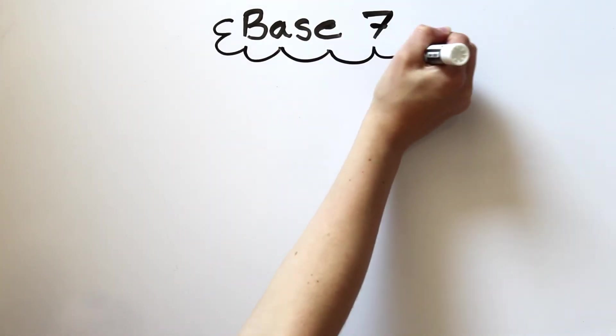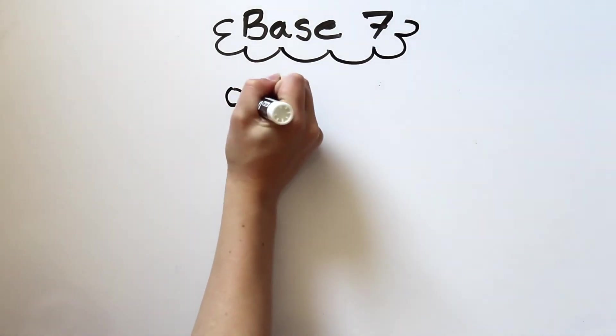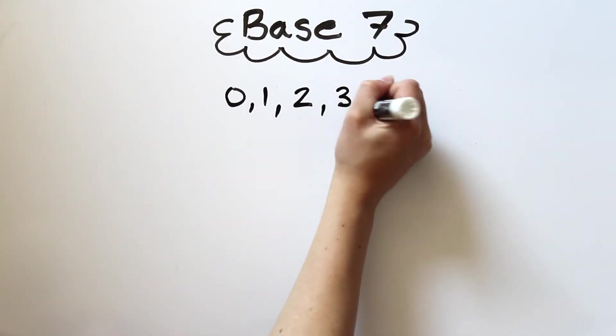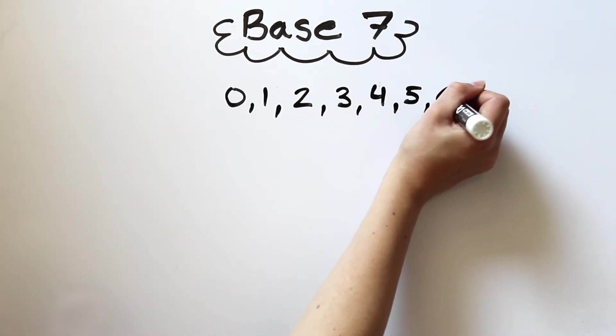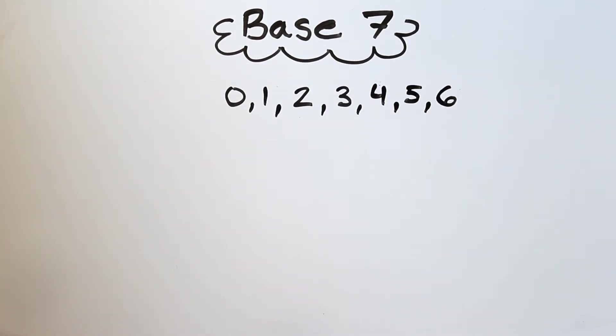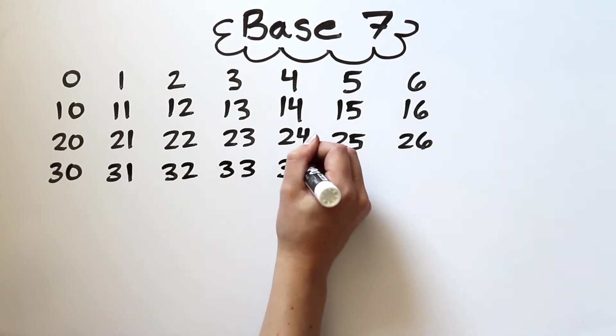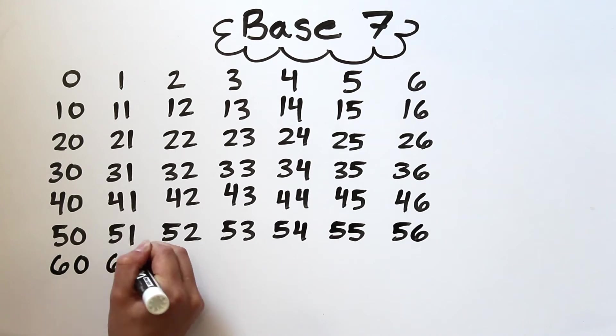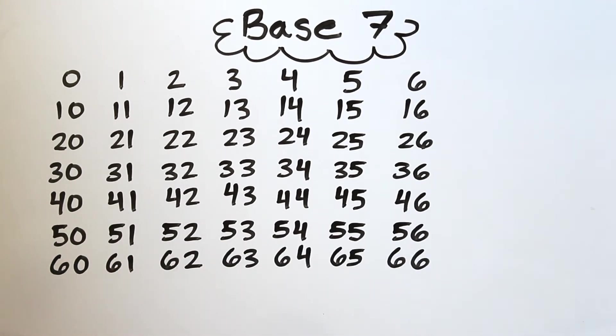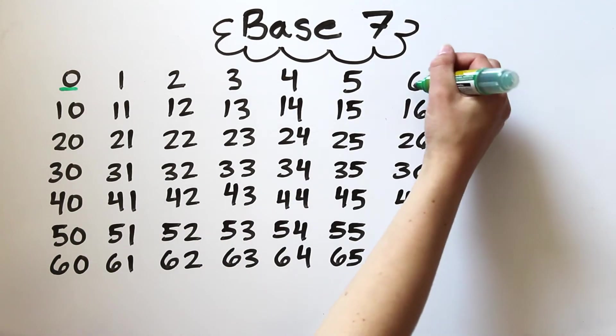Let's jump to base 7 now. We have 7 digits to represent numbers: 0, 1, 2, 3, 4, 5, and 6. We'll start counting in base 7, but this time we'll write the numbers in a grid.